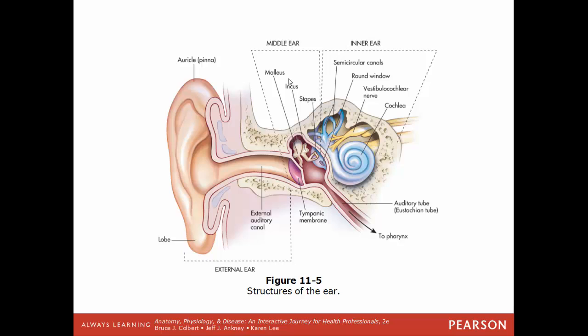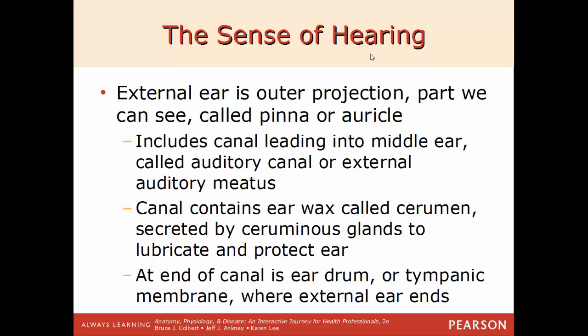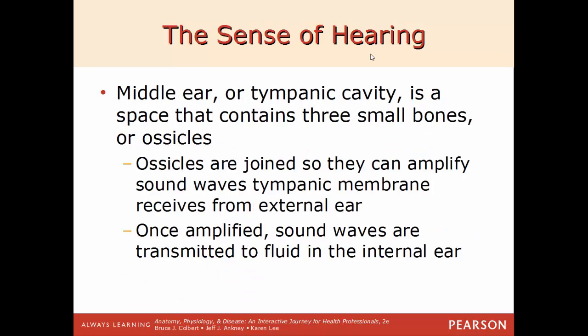The external ear is the actual part we see — the pinna or auricle — going all the way to the eardrum or tympanic membrane. The middle ear is where you find the smallest bones of the body, the ossicles. The external ear also includes the auditory canal, also called the external acoustic meatus, which produces cerumen or earwax via the ceruminous glands to help lubricate and protect the ear. At the end of this canal is the tympanic membrane, which separates the external and middle ear, and the tympanic cavity contains the three ossicles.